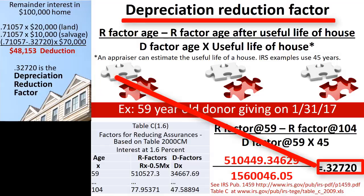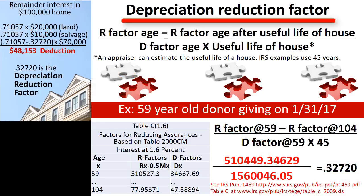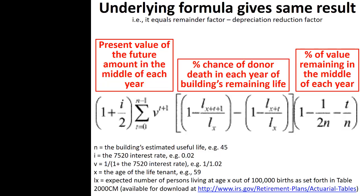In other words, this is how much less the percentage deduction for the depreciable portion will be as compared with the land portion. In this example, the land portion can be deducted at 71.057%, while the depreciable portion must be deducted at 32.720% less — that is, 38.337%. The process of plugging in the R factor and D factor numbers and subtracting the result from the remainder interest factor is a shortcut to the result generated by the formula in the actual IRS regulations.